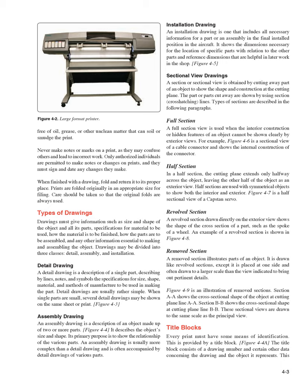An assembly drawing is a description of an object made up of two or more parts. It describes the object's size and shape, and its primary purpose is to show the relationship of the various parts. An assembly drawing is usually more complex than a detail drawing and is often accompanied by detail drawings of various parts. An installation drawing is one that includes all necessary information for a part or an assembly in the final installed position in the aircraft. It shows the dimensions necessary for the location of specific parts in relation to other parts and reference dimensions helpful in later shop work.